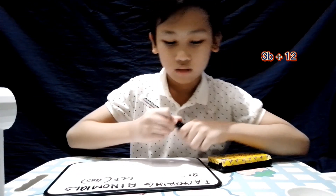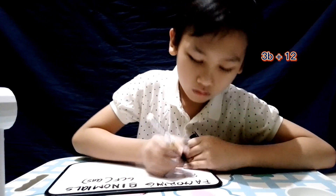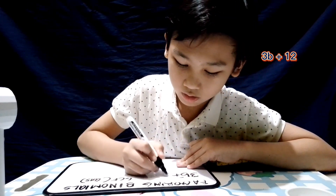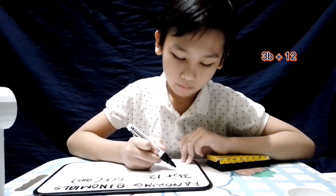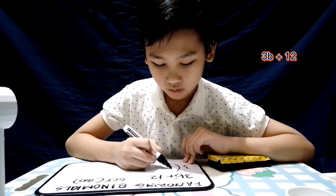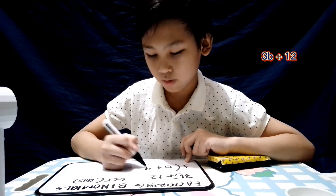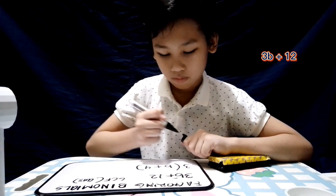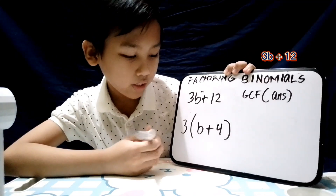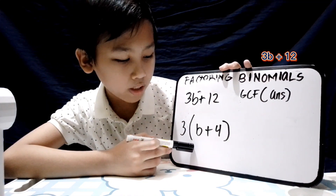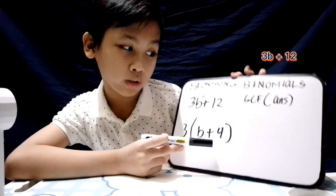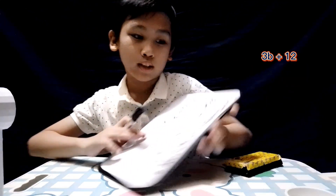Next: 3b plus 12. The answer is 3 times open parenthesis b plus 4, close parenthesis. Very good.